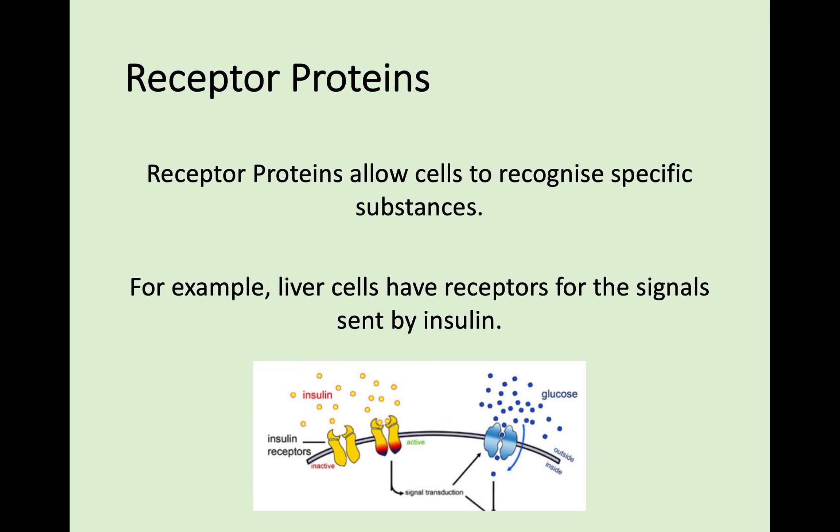For receptors, these are proteins that allow cells to recognise specific substances. For example, going back to the hormone insulin, liver cells have certain receptors on them for the signals sent by insulin. Without these receptors, they would not be able to recognise what substance is coming across.